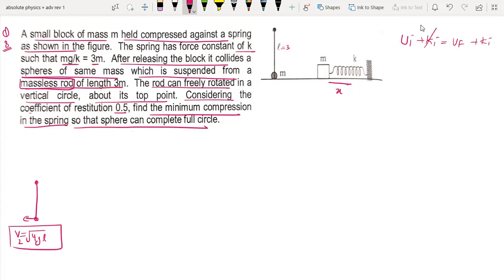Initially, the block velocity is zero. The potential energy in the spring is equal to half K x squared. Finally, the block has kinetic energy, half M V squared. This is equal to half M V squared.